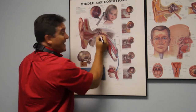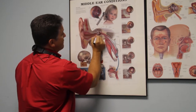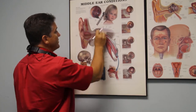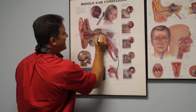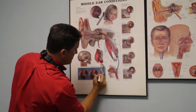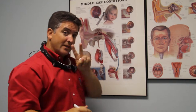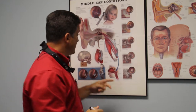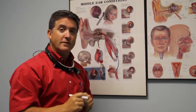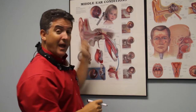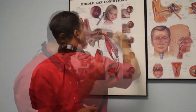The tube has a second purpose. The first purpose may be to drain fluid out, but it also allows for air to get into the middle ear through the middle of the tube. So the tube has two functions, and those two functions are to replace the two functions of the eustachian tube — it allows air to get in and allows fluid to get out.